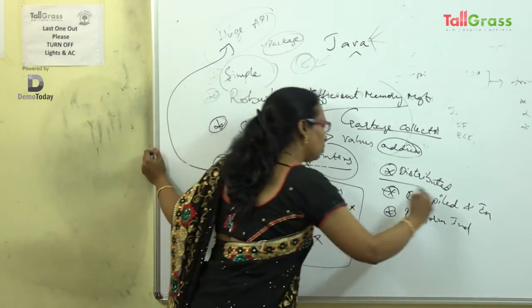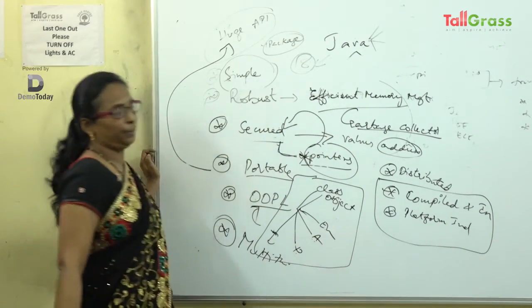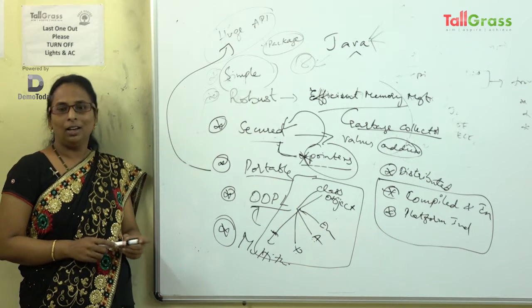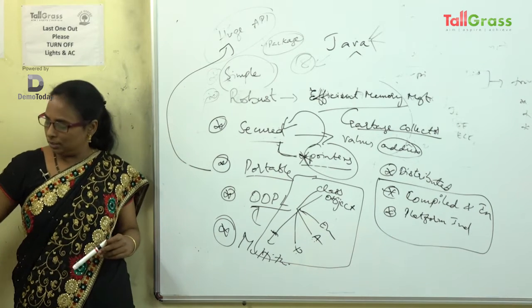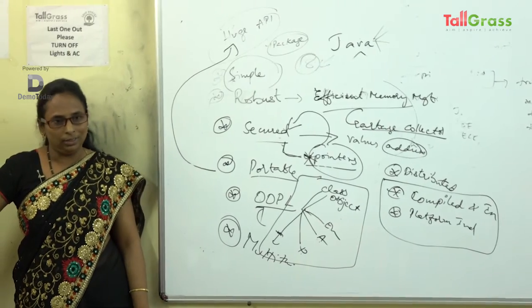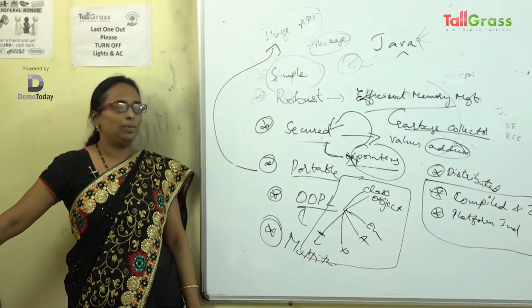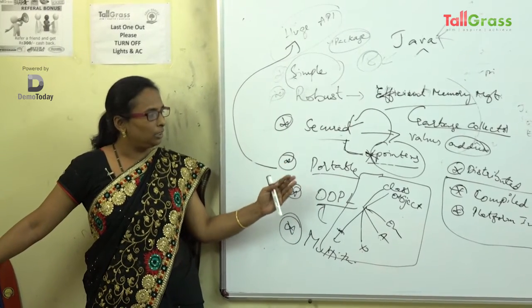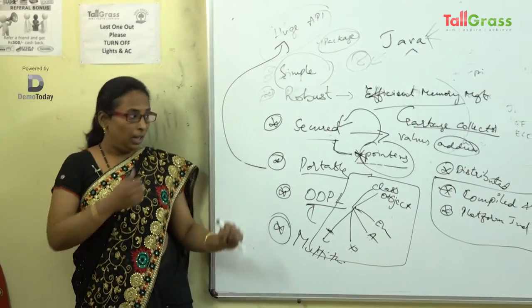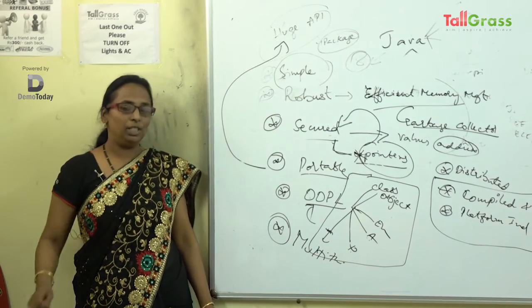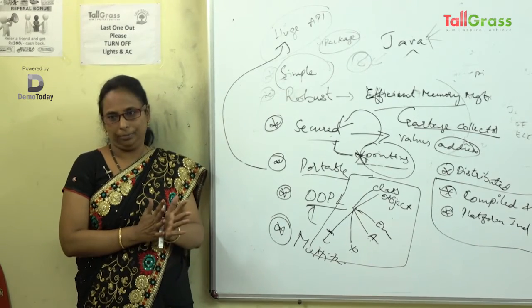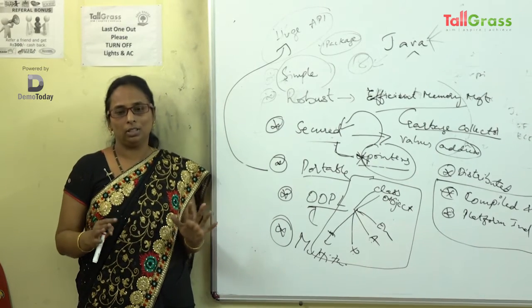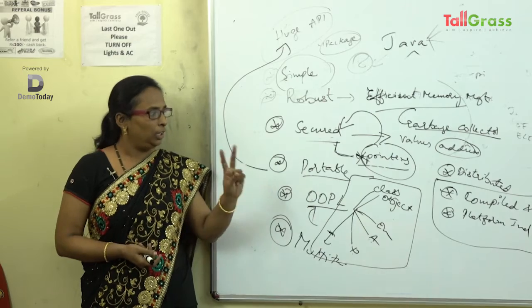The last feature is that Java is platform independent, and this is what has kept Java evergreen. People say there are lots of opportunities in Java because it is compiled and interpreted, and because of that Java is platform independent. Platform independent means I am not concerned about what OS you are maintaining — if I have the software, I can compile and execute my program on any system.